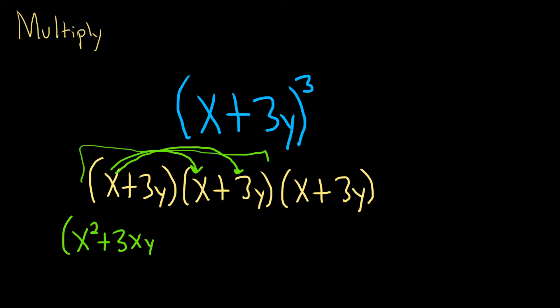Then you go to the next one. So in this case, it'd be 3y times x will also give us 3xy. It's really 3yx, but that's the same as 3xy. And then 3y times 3y will give us 9y squared. Right? 3 times 3 is 9, y times y is y squared. And then we still have our x plus 3y.